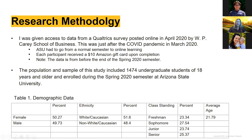The demographic information shows 50.27% female and 49.73% male. Ethnicity was 51.6% white Caucasian and 48.4% non-white Caucasian. Class standing came from all across the board — freshman to senior — with percentages fairly even throughout, which I think gives a good representation. The average age of total students was 21.79.